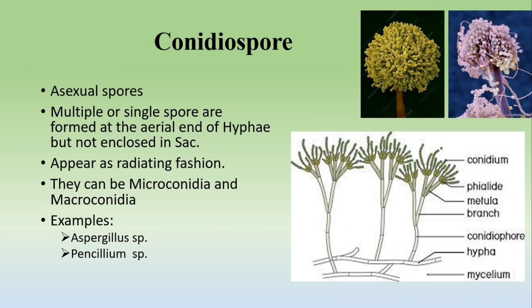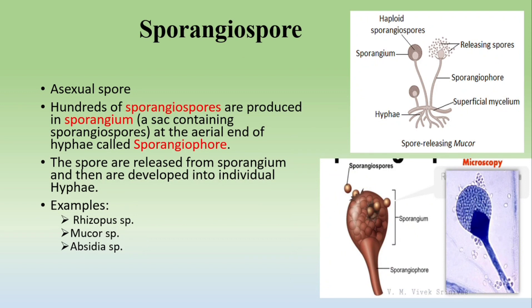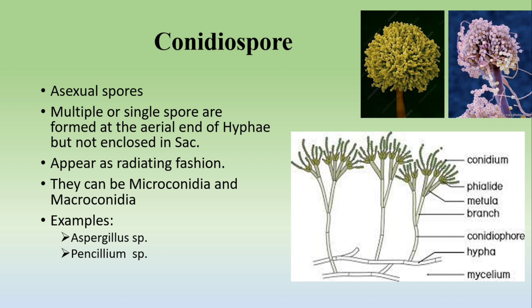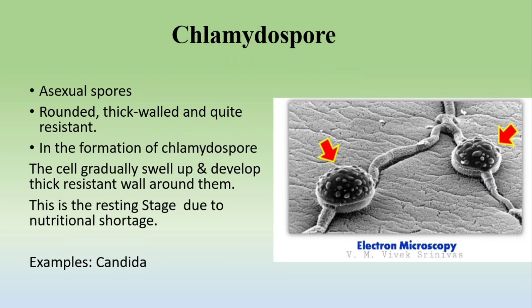The second type are conidiospores. The difference between conidiospores and sporangiospores is that while sporangiospores are enclosed in a sac-like sporangium, conidiospores are single spores present directly on the hyphae — they are not enclosed in any closed structure. The individual structure is known as a conidium, and they appear in a radiating fashion. They can be macroconidia or microconidia. Examples of conidiospore-producing fungi are Aspergillus and Penicillium species.